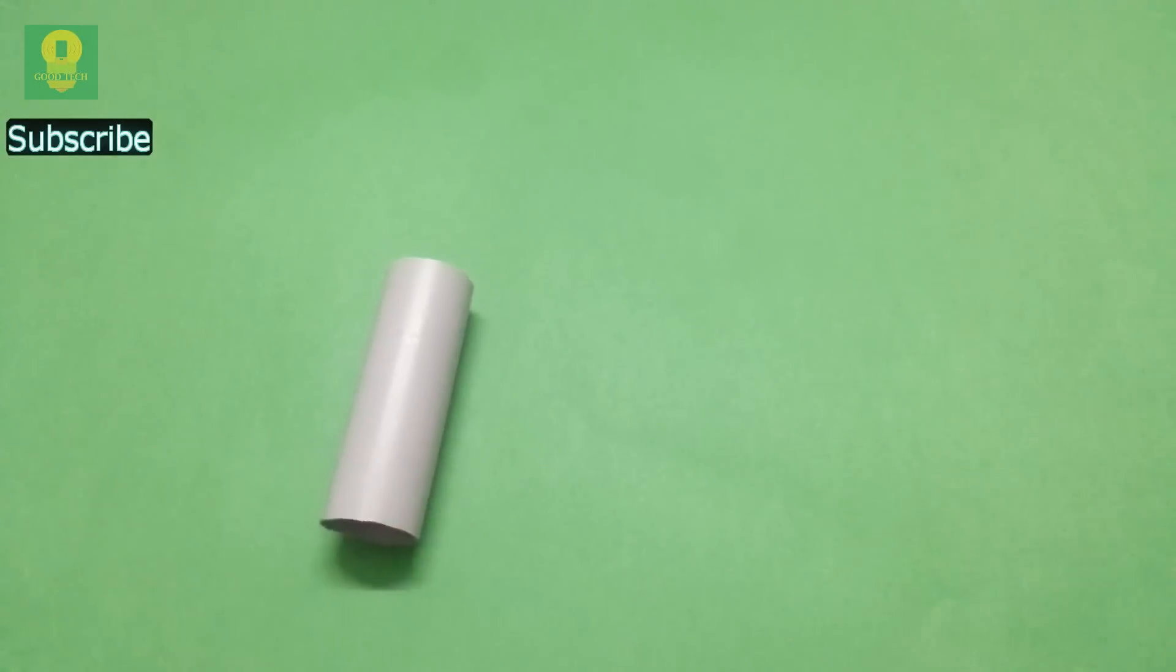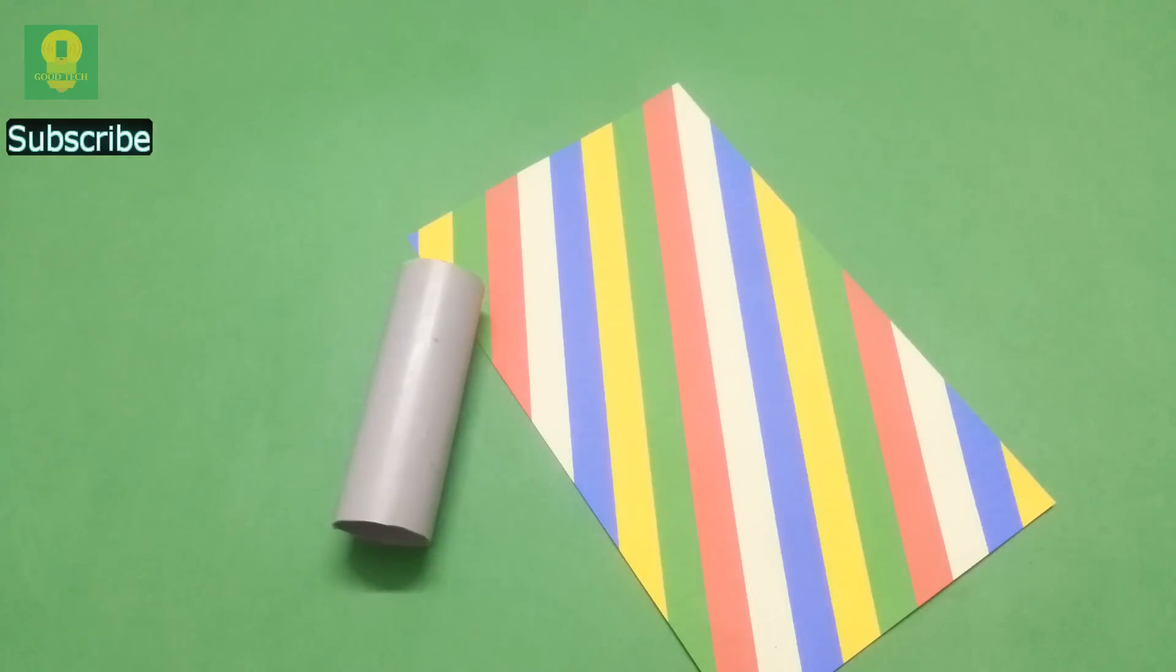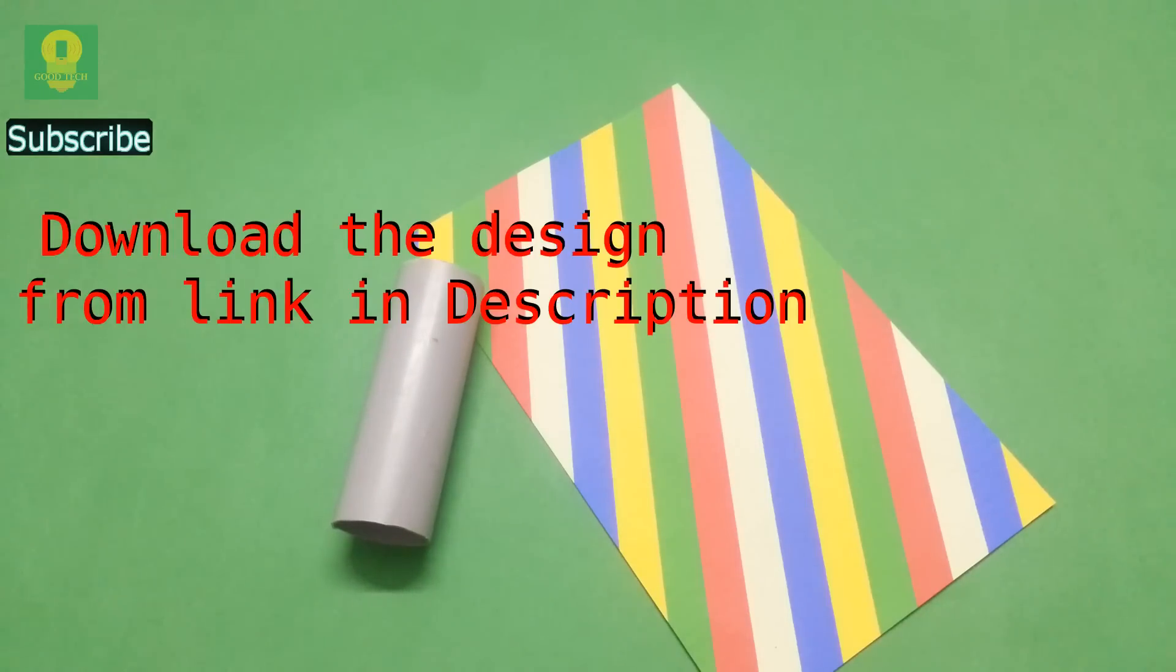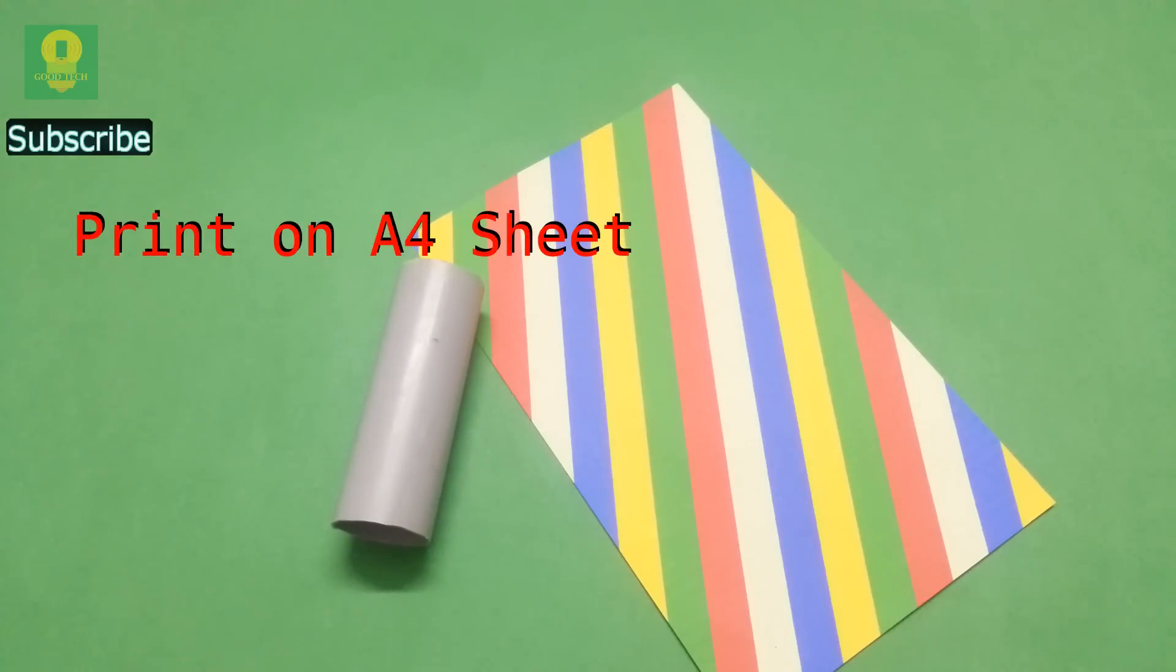To start, take a small piece of PVC pipe and a printed textured paper. You can download the design from the link in the description and print it on A4 sheet.